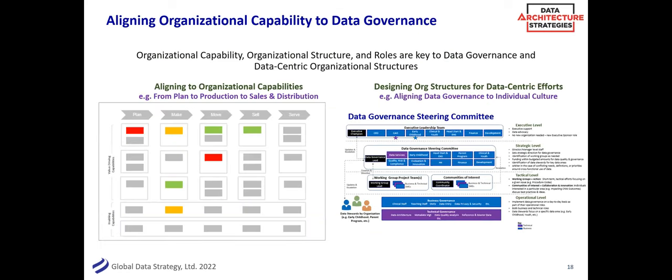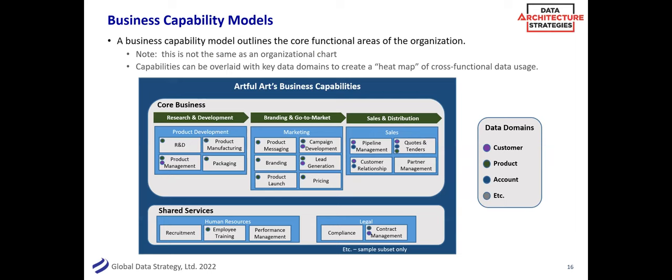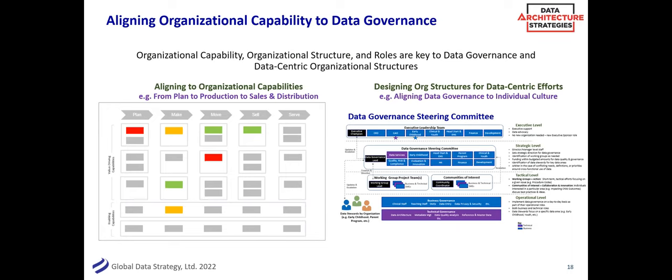One way when designing a data governance framework — and it's a whole other webinar — when you have a steering committee, who sits on that committee? Is it by different organizations, by different data domains? One way is to do it by different organizational capabilities — who's going to represent product marketing, product development, human resources? All these different areas could sit on that committee. It's often a way to organize your data governance framework or councils, and a way to map that out.